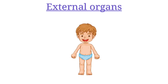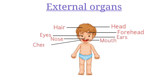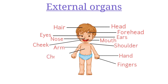Children, now let us look at the given picture and label the external body parts that can be seen. Let's start from the top: head, hair, forehead, eyes, ears, nose, mouth, cheek, arm, hand, fingers, shoulder, chest, leg, foot. So children, these are our external body parts.